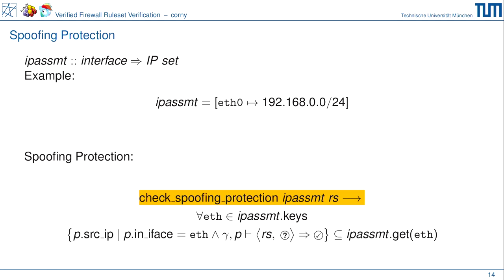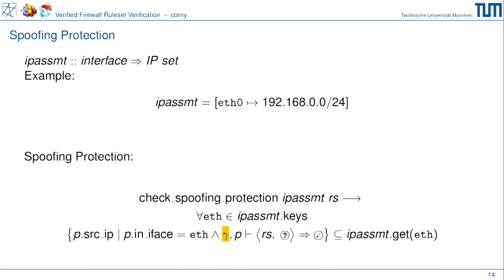Was hier besonders cool ist: gamma — die Menge aller Features, die unsere Firewall unterstützt — ist hier beliebig gewählt. Das heißt, unser Algorithmus kann für jede iptables-Bedingung mit Sicherheit sagen, ob wir Spoofing-Schutz haben. Möglicherweise implementiert das iptables-Team eine zusätzliche neue Regel — dieser Algorithmus kann das tatsächlich verstehen und prüfen, ob Spoofing-Schutz immer noch gewährleistet ist. Egal welches beliebige Feature eingebaut wird — wir verstehen alle beliebigen Match-Conditions, die wir jemals in der Firewall benutzen können.